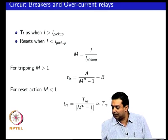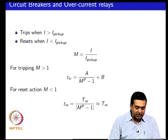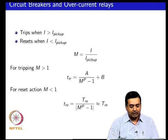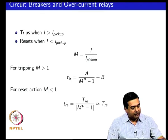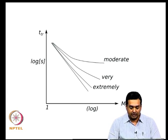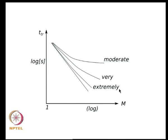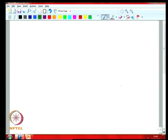If you look at the parameters A, B, P, etcetera, you can classify your overcurrent protection devices as moderately inverse, very inverse, or extremely inverse characteristics. A good reference for these parameters is the IEEE standard.